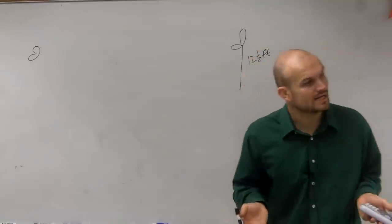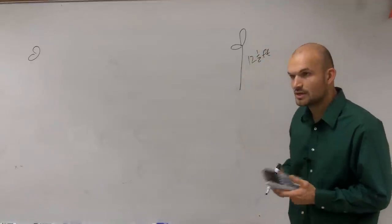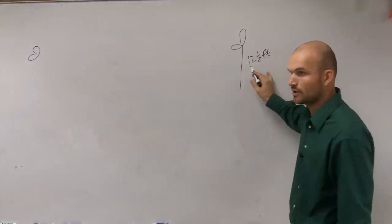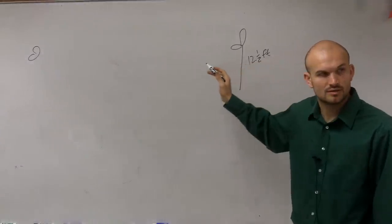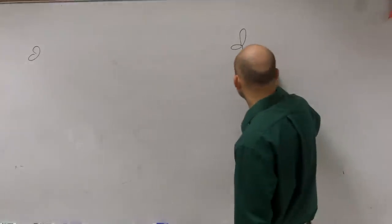Well, how many inches are in one foot? 12. So I have 12 of them. Do 12 times 12, which is going to be 144. Half of a foot would be 6. So actually this is going to be 150 inches.